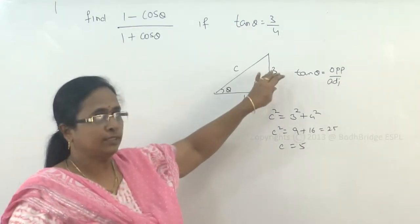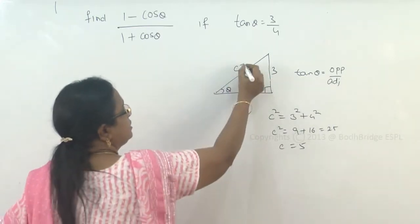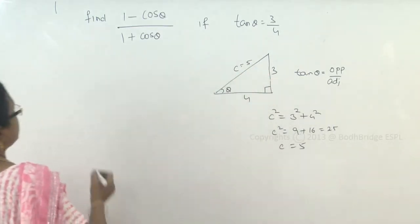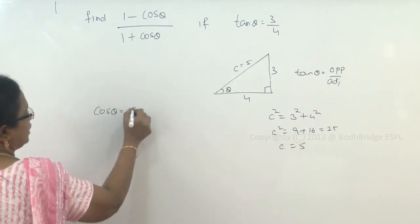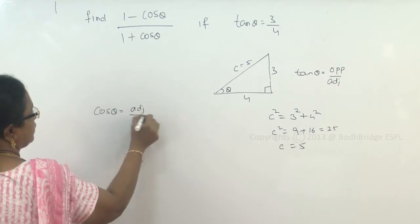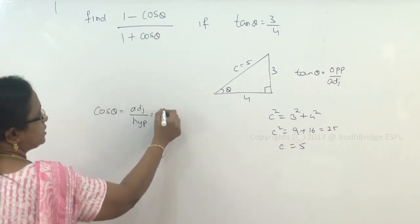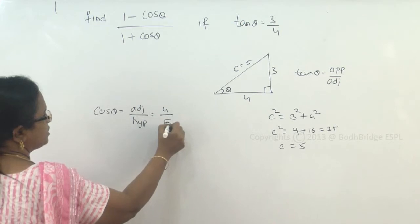If the two sides are 3 and 4, the third side has to be 5, therefore this side is 5. So, we can replace here the cos theta which is adjacent by hypotenuse, adjacent side is 4 by hypotenuse is 5.